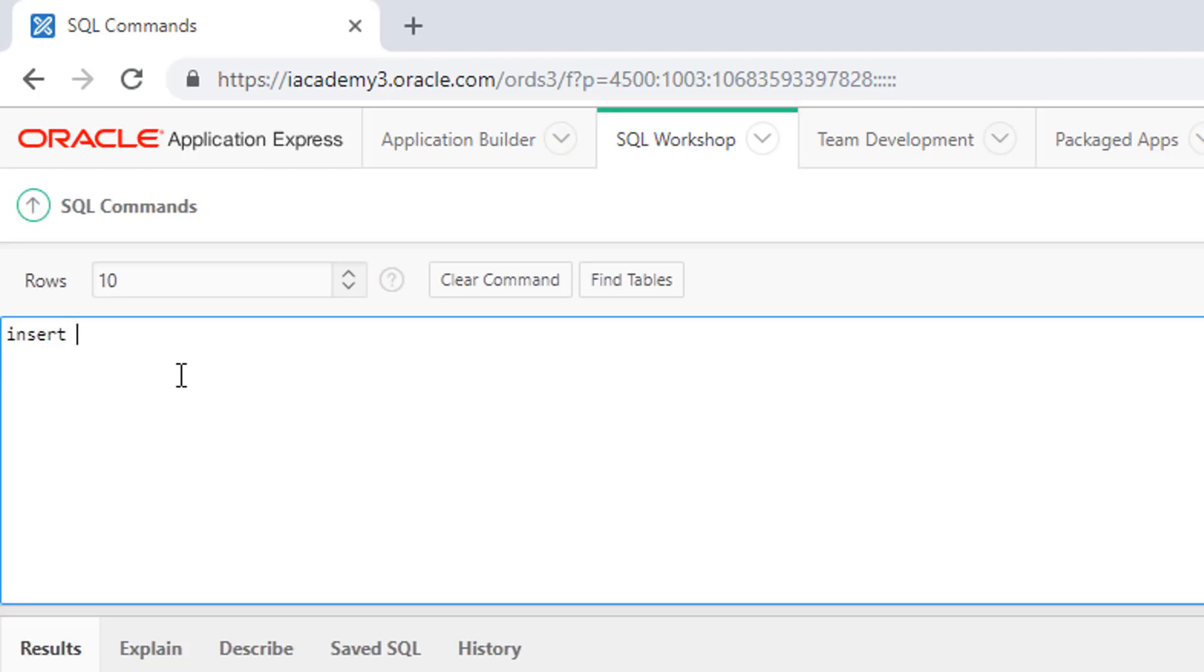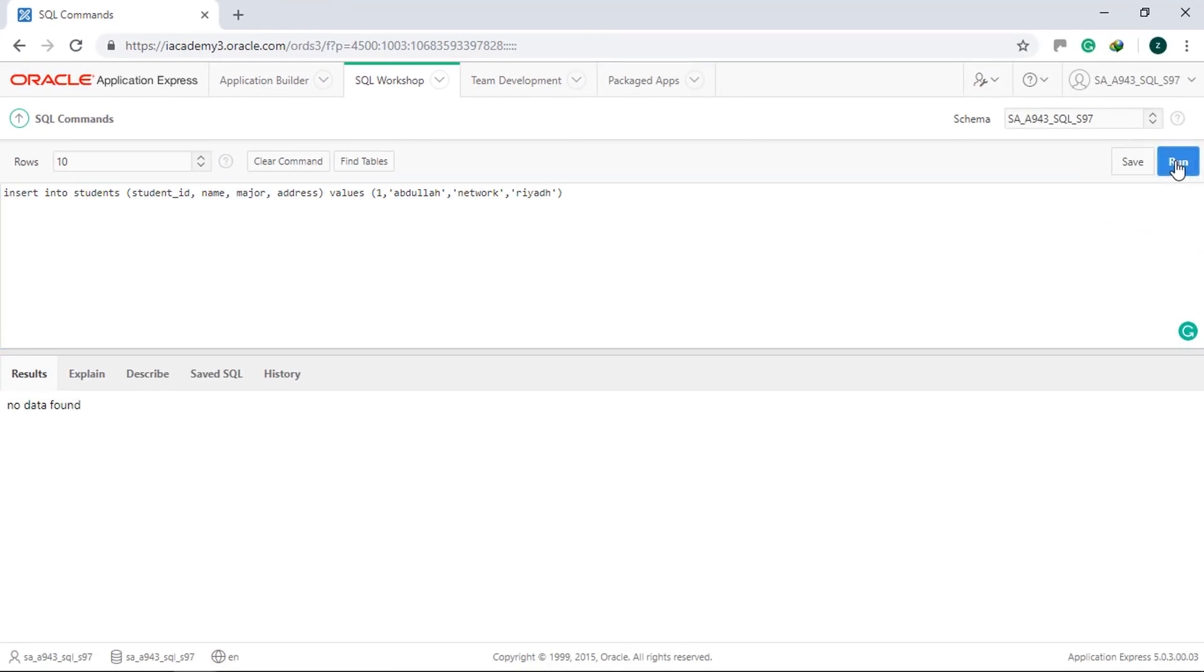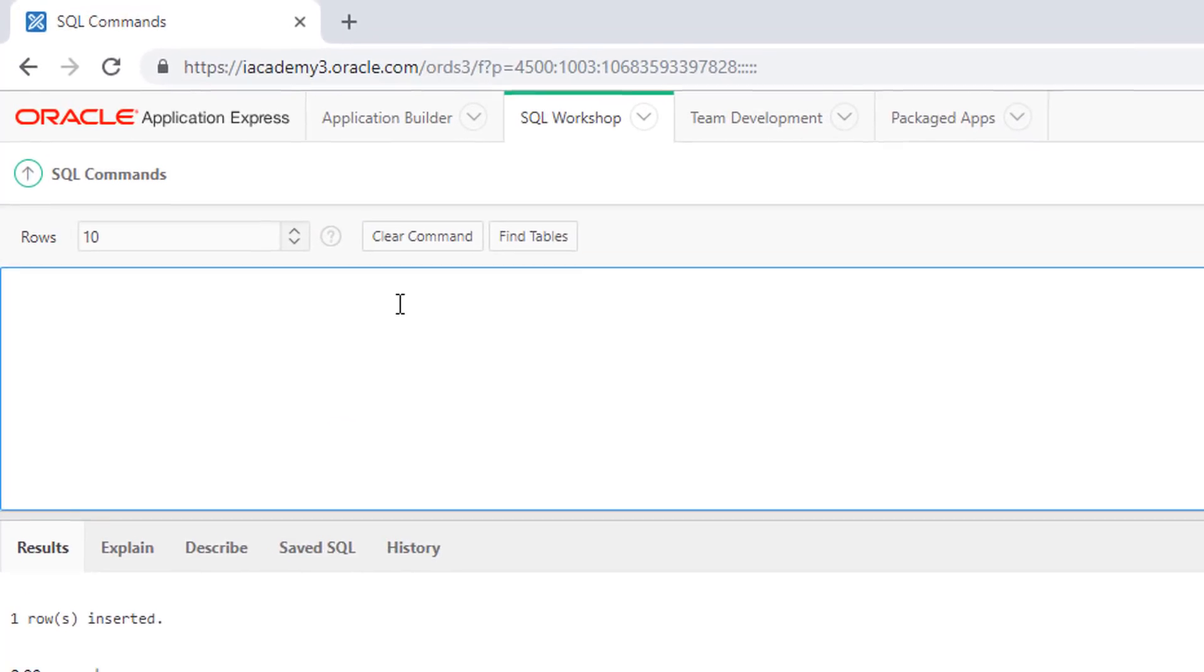Let's enter all of them. Let's insert student ID, name, major, and address with values of one, Abdullah, network, and Riyadh. Run it. Click clear.